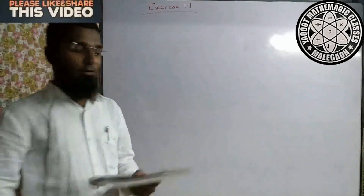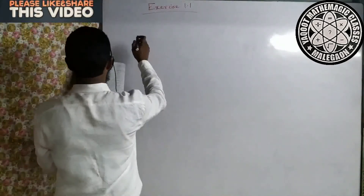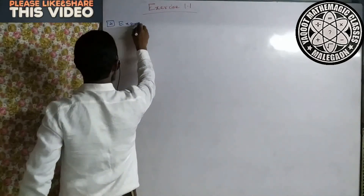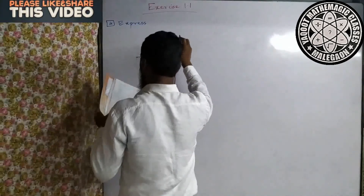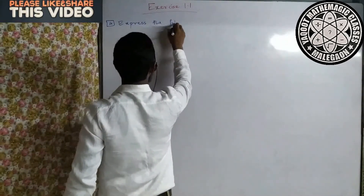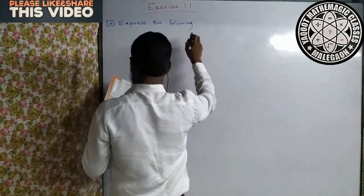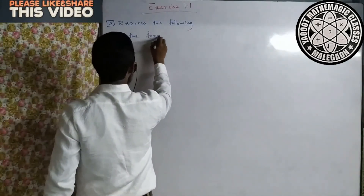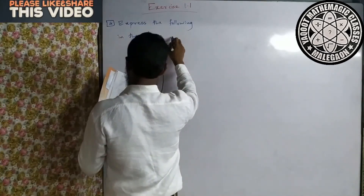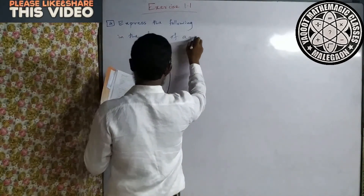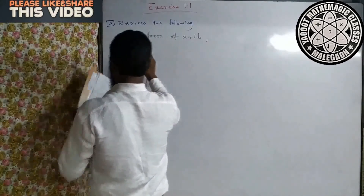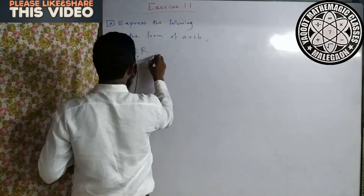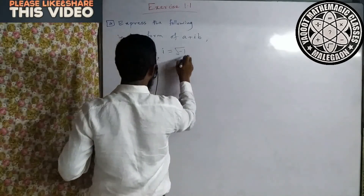Uske baad hamara hai question number 4: express the following in the form of a plus ib, where a, b belong to set of real numbers and i is equal to root of minus one.